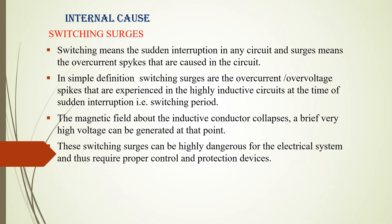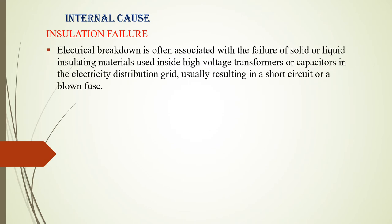For example, when you switch on a tube light or a water pump, you can see a lot of voltage spike at the initial instant. The reason is that the inductor has the capacity to store energy, and when released during switching on, this leads to a sudden interruption in the circuit. Similarly, when the magnetic field around the inductor collapses, very high voltages are generated. Because of these high voltages, insulation failure takes place — an electrical breakdown occurs, especially in the electricity distribution grid, resulting in short circuits or blown fuses.